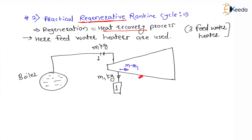From m − m1 mass, again I will extract m2 mass at a different pressure. So m2 kg mass is extracted in feedwater heater 2 — the second feedwater heater for process heating. Initially m was the inlet mass to the turbine. Then m1 mass was extracted at some pressure, and again m2 mass is extracted. So the remaining mass becomes m − m1 − m2.